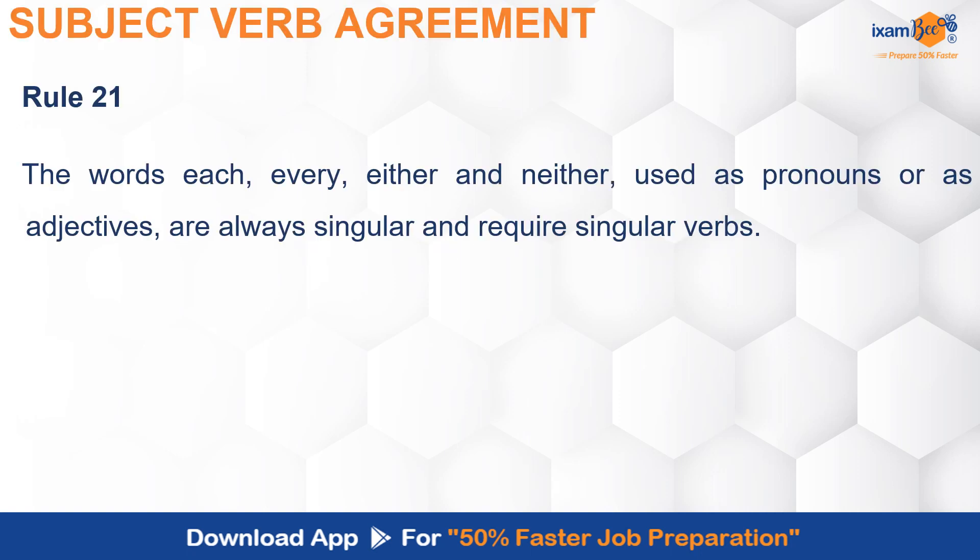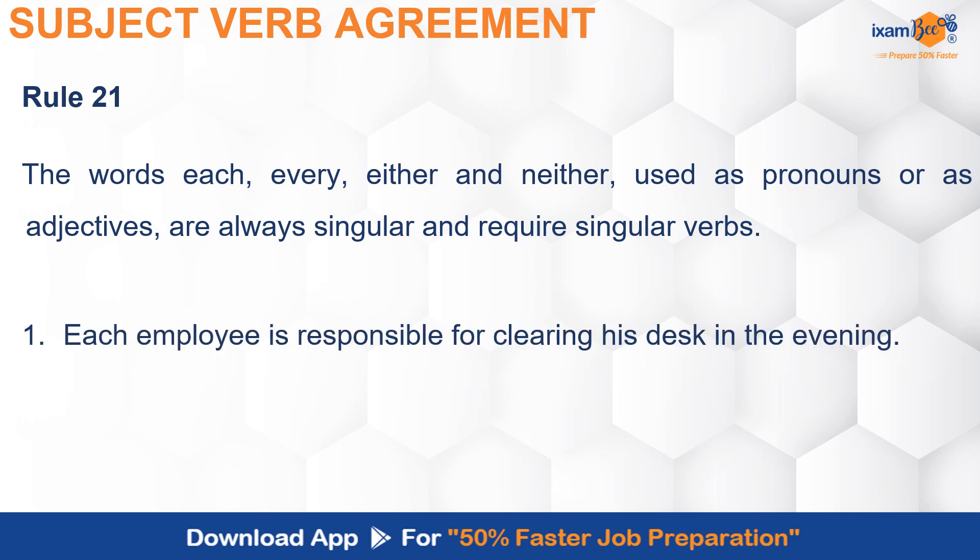The first rule is that the words 'each', 'every', 'either', and 'neither', when used as pronouns or adjectives, always take singular verbs. So each, every, either, and neither will always be followed by a singular verb. For example: 'Each employee is responsible for clearing his desk in the evening.' So you will say 'each employee is responsible.'